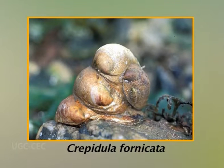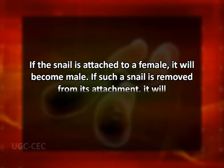Another example in which sex determination is affected by location is the slipper snail Crepidula fornicata. In this species, individuals pile up on top of one another to form a mound. Young individuals are always male. This phase is followed by degeneration of the male reproductive system and a period of lability. The next phase can be either male or female, depending on the animal's position in the mound. If the snail is attached to a female, it will become male. However, if such a snail is removed from its attachment, it will become female. Similarly, the presence of large numbers of males will cause some males to become females. However, once an individual becomes female, it will not revert to being male.